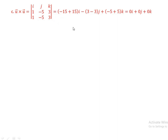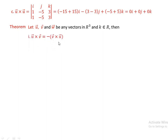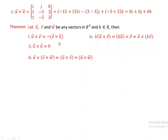Let u, v, and w be any vectors in R³ and k a real number. The following properties hold: (1) u cross v = minus(v cross u); (2) u cross u = 0; (3) u cross (v plus w) = (u cross v) plus (u cross w); (4) k·(u cross v) = (k·u) cross v = u cross (k·v); (5) ||u cross v||² = (u·u)(v·v) minus (u·v)²; (6) u·(v cross w) = w·(u cross v).